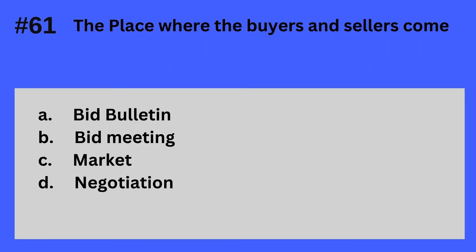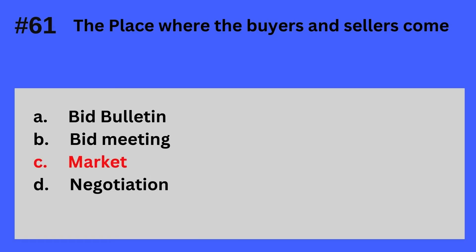Question 61. The place where the buyers and sellers come. A. Bid bulletin, B. Bid meeting, C. Market, D. Negotiation. The answer is C — Market. Market is defined as the place where the buyers and sellers meet.